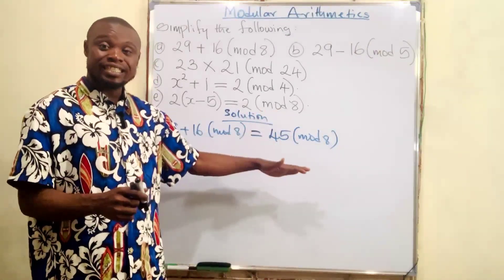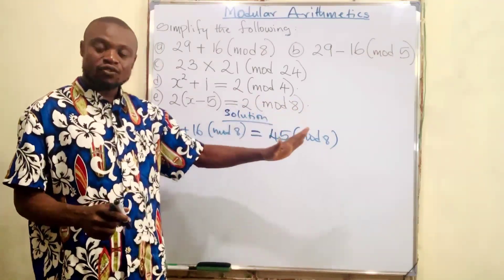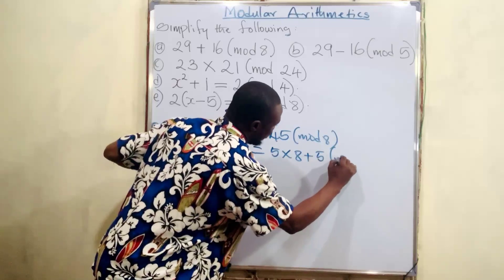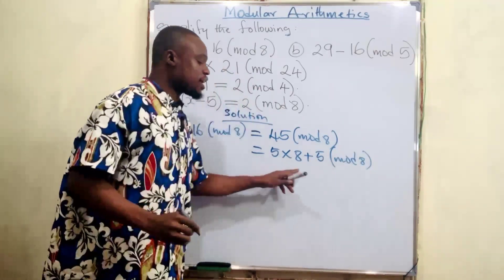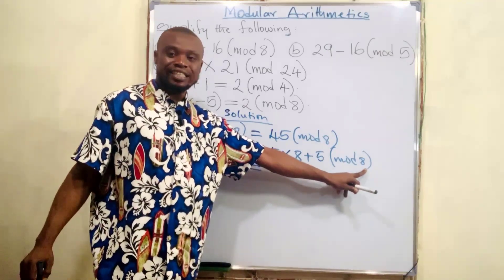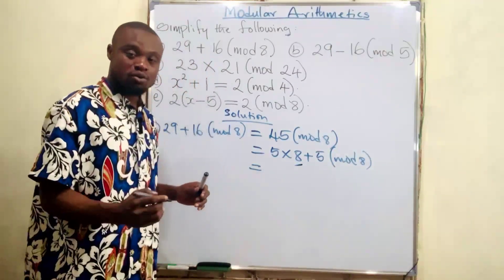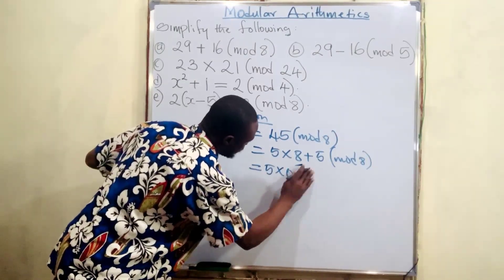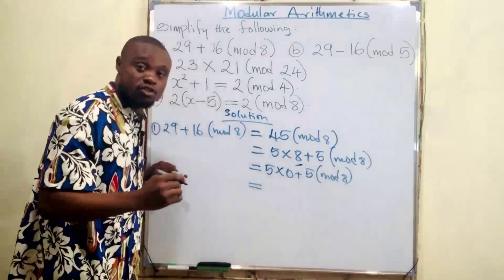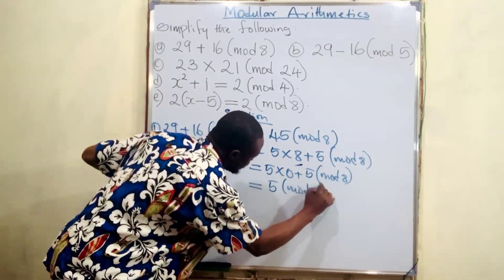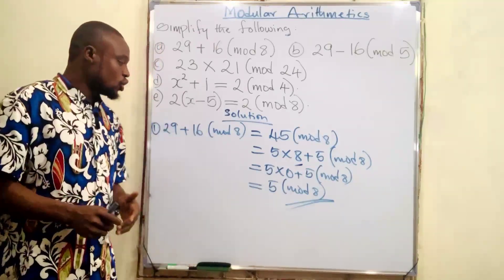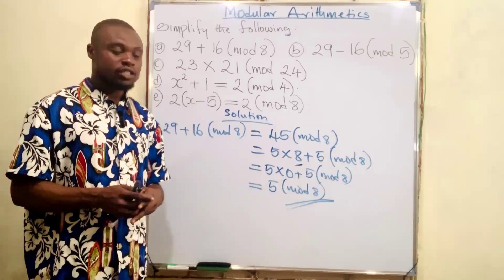Now we need to find 45 in mode eight. We divide 45 by eight: five times eight is 40, plus five gives 45. So this is five times eight plus five, all in mode eight. Since there's no eight in mode eight, the eight becomes zero. We have five times zero plus five in mode eight, which gives five. So 29 plus 16 mod 8 equals five mode eight.